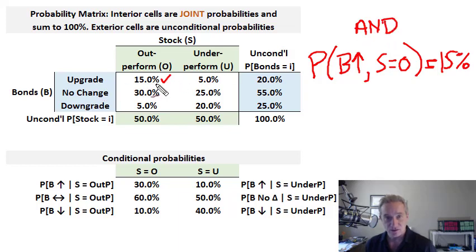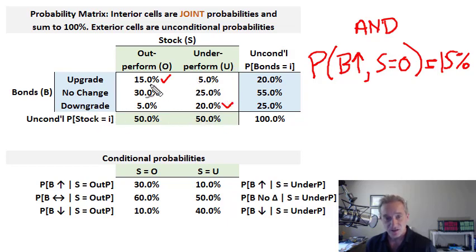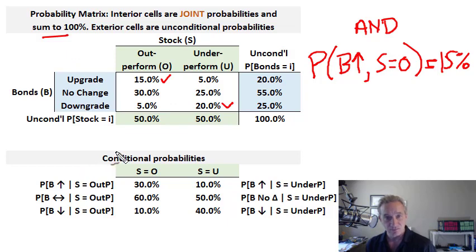This joint outcome occurs with a probability of 15%. Similarly, the 20% is the joint probability that the bond downgrades and the stock underperforms. These joint probabilities are mutually exclusive, and as a probability matrix their sum must be 100%. So that's the joint probability.